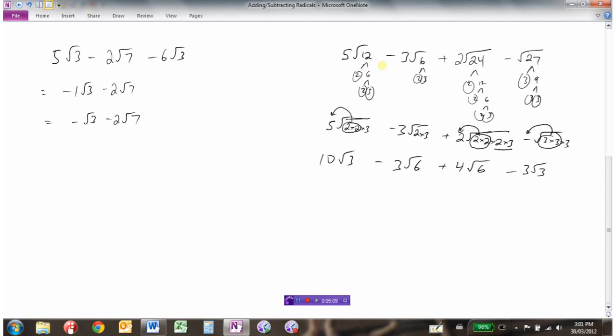So after we have simplified each radical, now we can actually see that there's 10√3 take away 3√3 so that's 7√3. And then we have -3√6 + 4√6 so those are like terms, so that would be plus 1√6, or I could just write +√6. So that's how we add and subtract radicals.